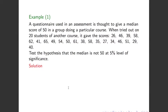We are going to apply the sign test to this example from your notes. A questionnaire used in an assessment is thought to give a median score of 50 in a group doing a particular course. When tried out on 20 students of another course, it gave the following scores. Test the hypothesis that the median is not 50 at the 5% significance level.